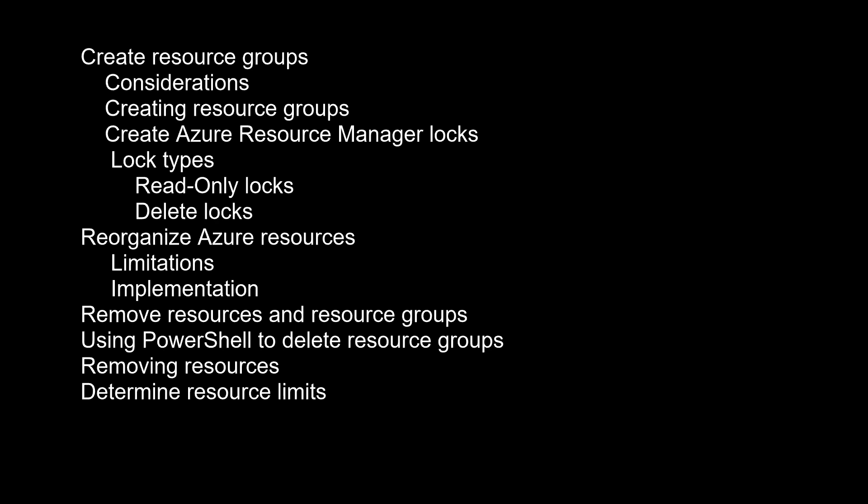When creating a resource group, you need to provide a location for that resource group. Why does a resource group need a location, and if the resources can have different locations than the resource group, why does the resource group location matter at all? The resource group stores metadata about the resources. Therefore, when you specify a location for the resource group, you are specifying where that metadata is stored. For compliance reasons, you may need to ensure that your data is stored in a particular region. Note: by scoping permissions to a resource group, you can add, remove, and modify resources easily without having to recreate assignments and scopes.